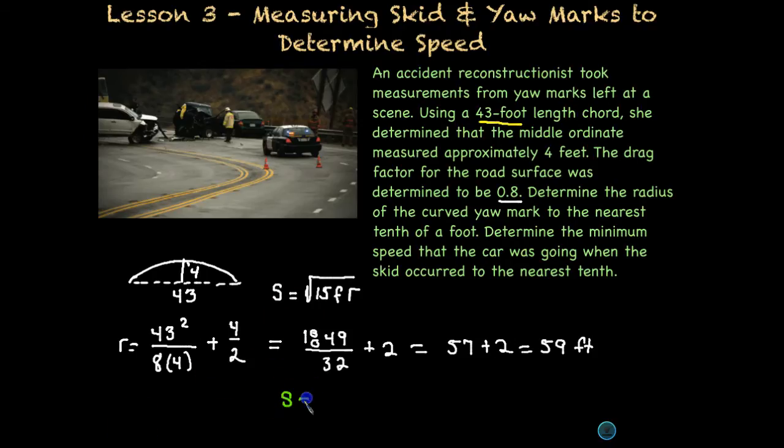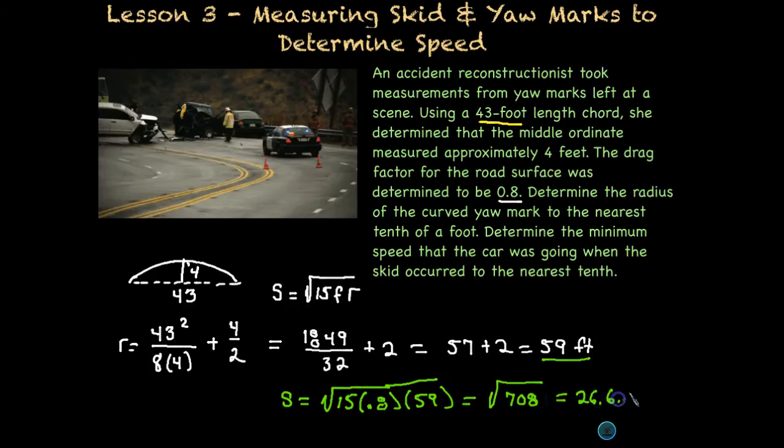Okay, so to find the speed, so I have now found the radius. To find the speed, now I'm going to take the square root of 15, times my drag factor of 0.8, times the radius I found of 59. If I put all that in my calculator, I end up with the square root of 708, and if I take the square root of that, I end up with 26.6 miles per hour. So we can determine that the minimum speed that car was going was 26.6 miles per hour.